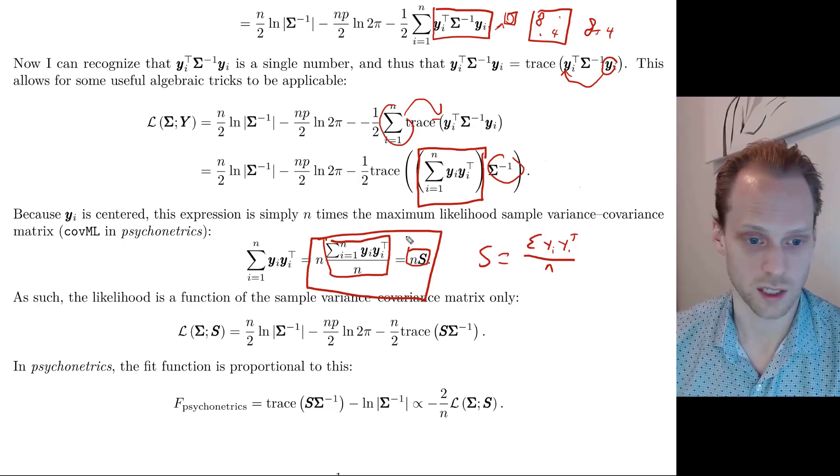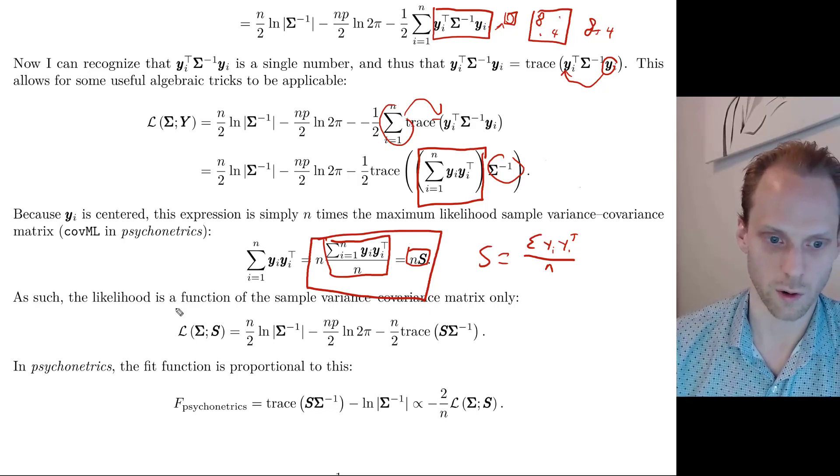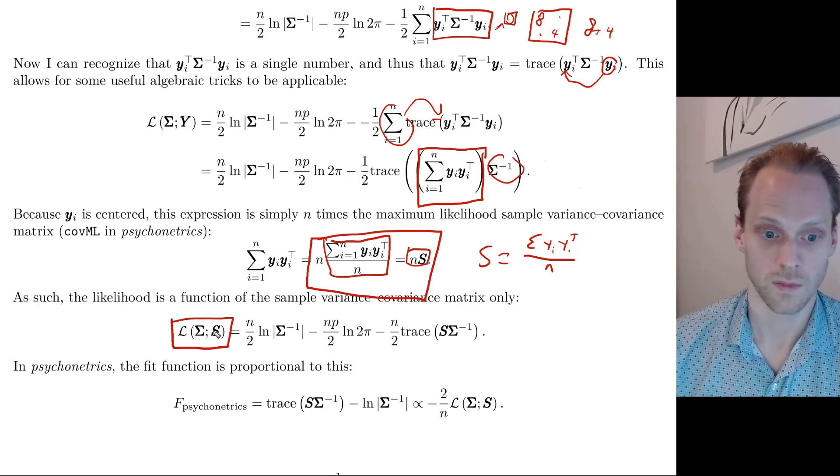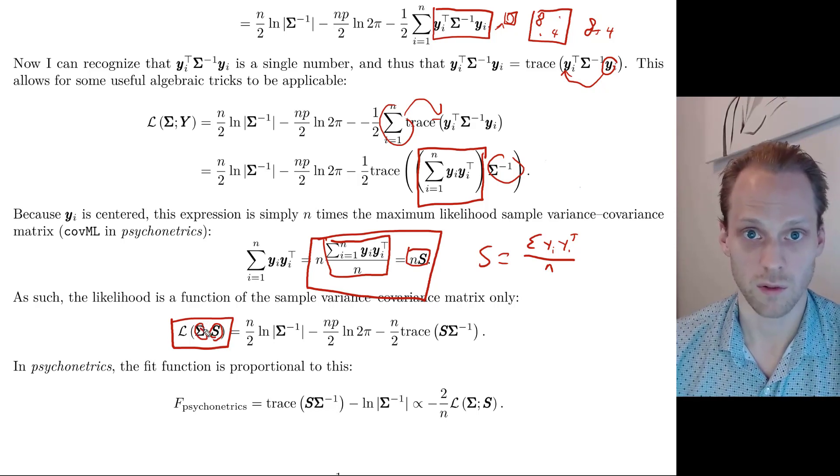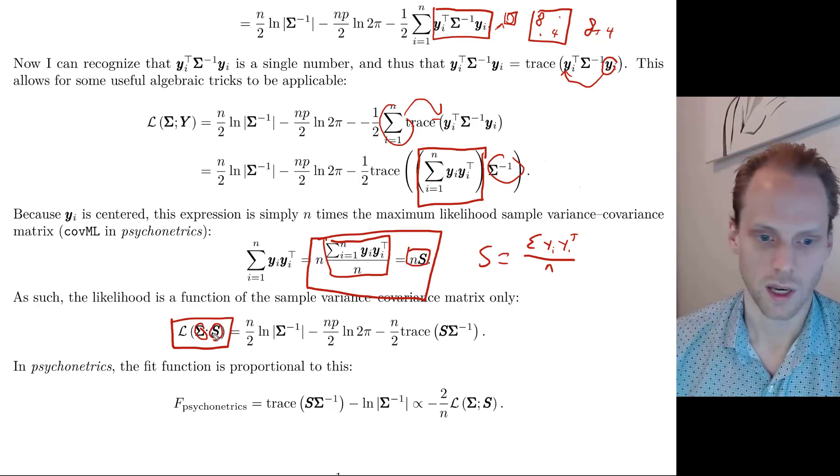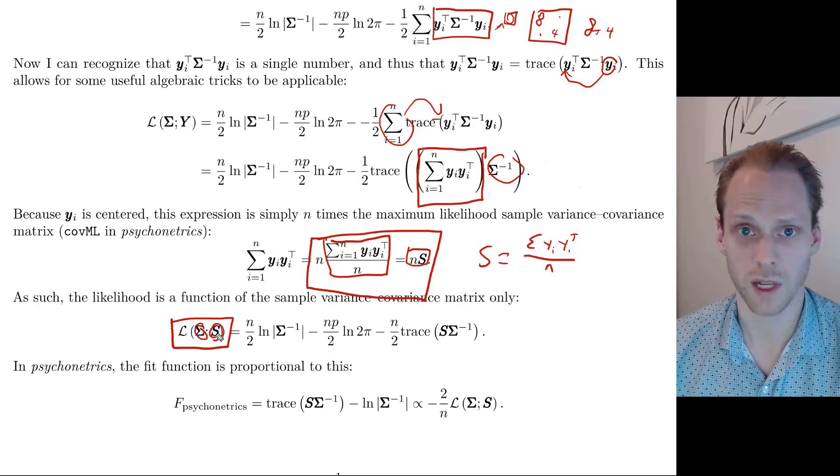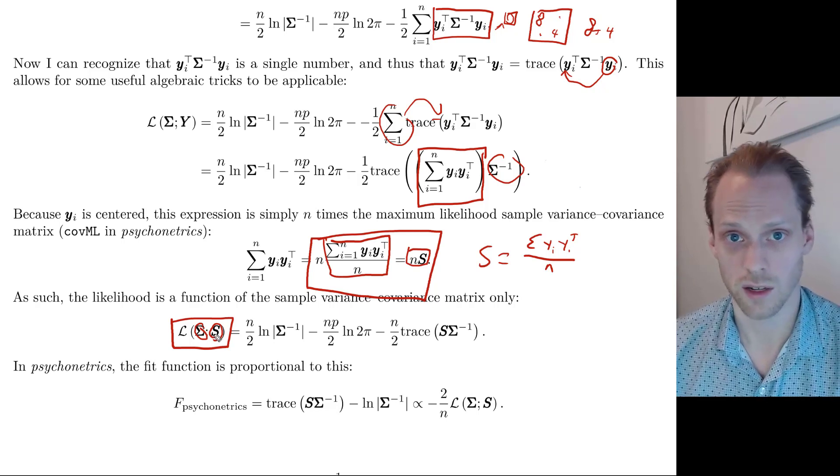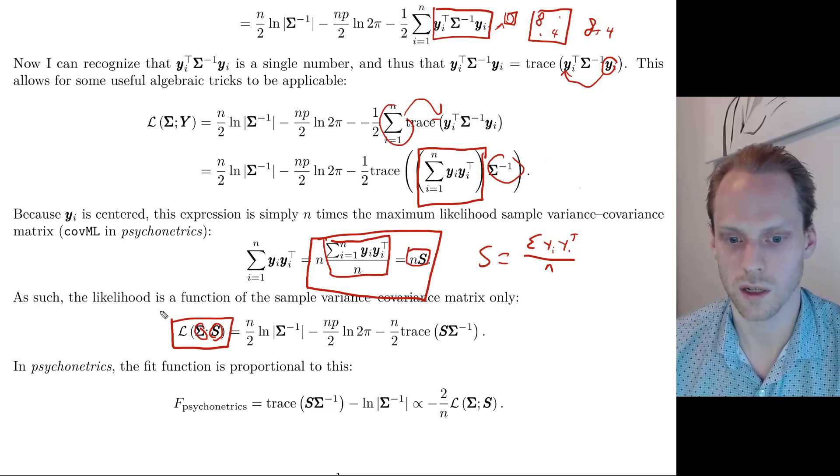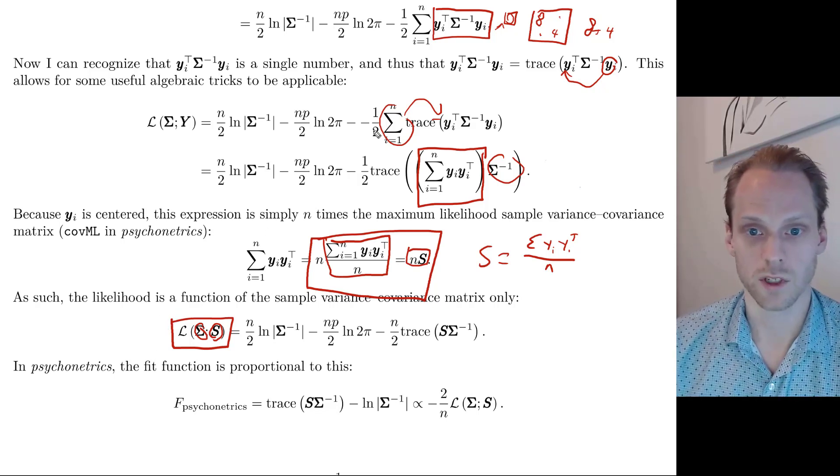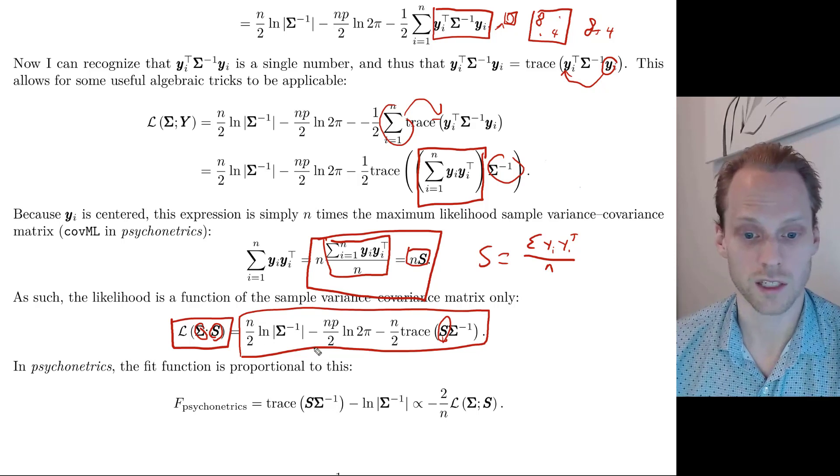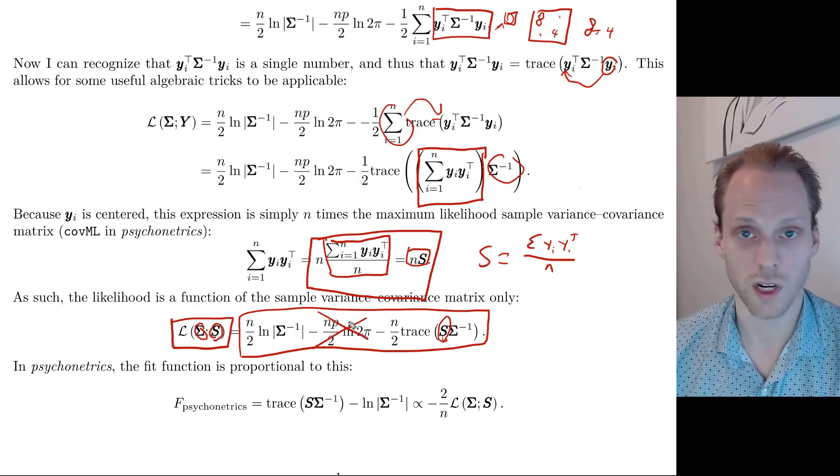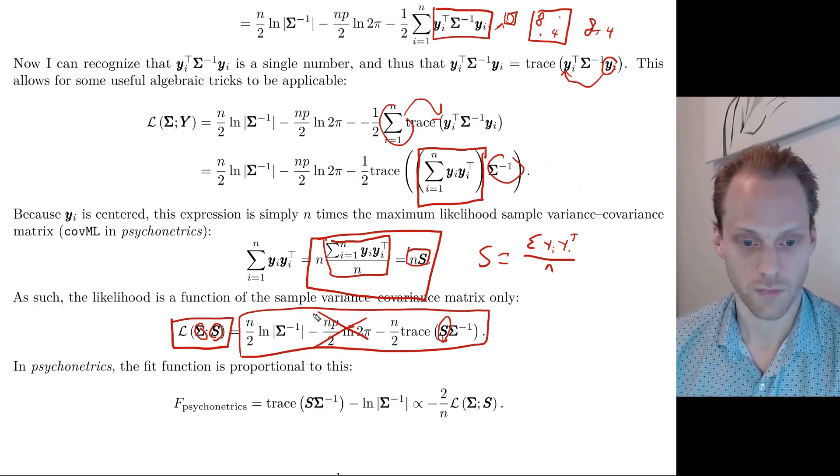Now, if you remember that the mean is 0 here, and otherwise it becomes a bit more complicated, but you can still do it, if the mean is 0 here, then this is actually very closely related to the maximum likelihood estimate of the variance covariance matrix. So s equals this sum over y transpose, actually minus mu and minus mu with mu is 0, divided by n. So this thing is simply n times s. And that's a beautiful expression, actually. This is really amazing that this is possible, because this means that we can write our log likelihood as a function of the variance covariance matrix only.